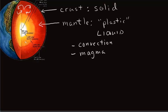And then the next part is going to be the outer core. And the outer core is definitely a liquid made up of mostly iron and also nickel.